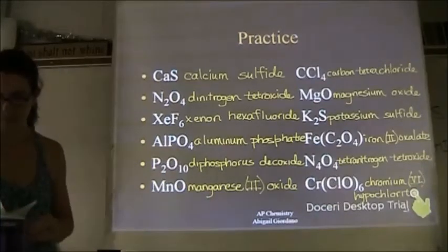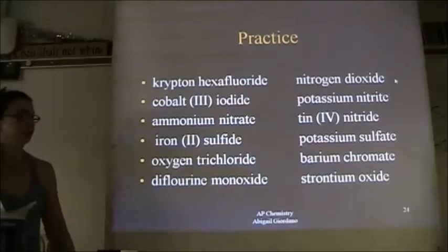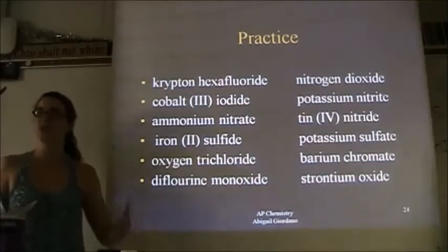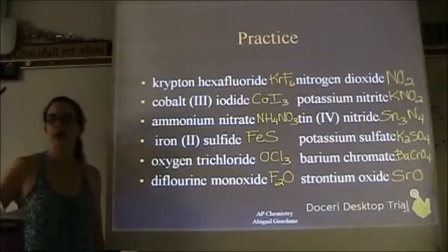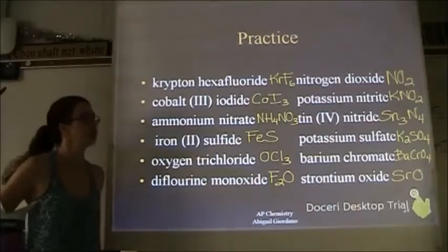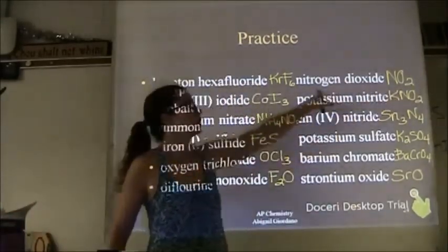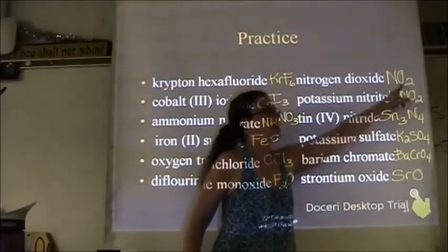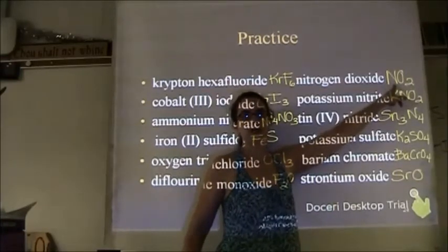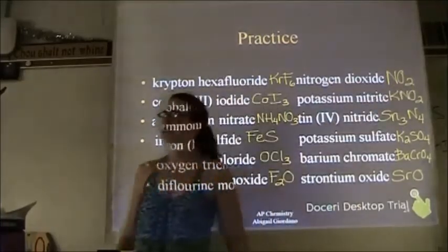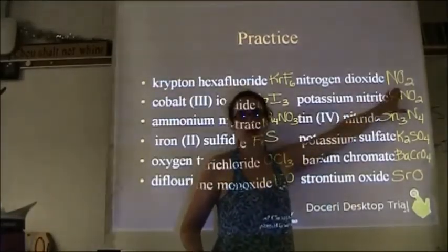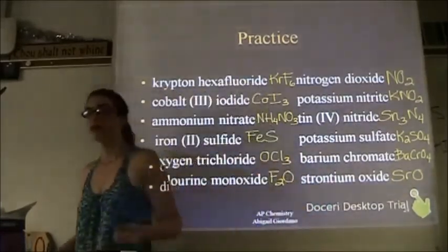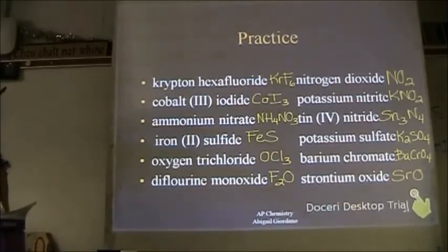Now we'll go the other way — I'm giving you names and you write the formula. If you're feeling rusty, decide what's ionic and what's covalent first. I want to point out one in particular: why is this not named nitrite? Why is the name of this nitrogen dioxide? Correct — it doesn't have a charge. This is a neutral compound. If it had a charge of negative one, then it would be nitrite.